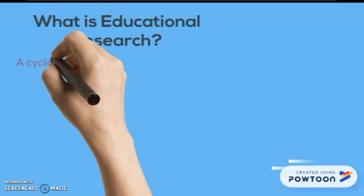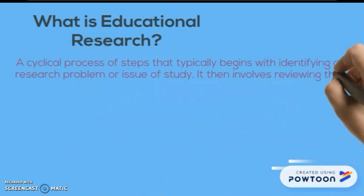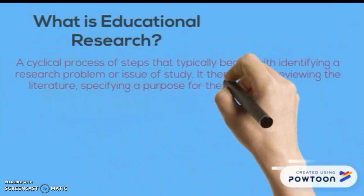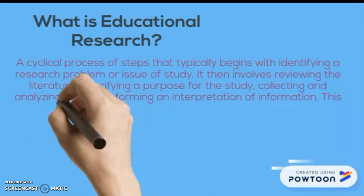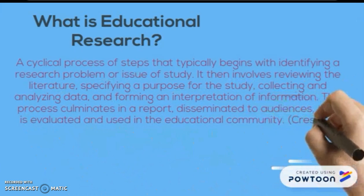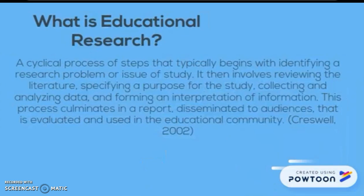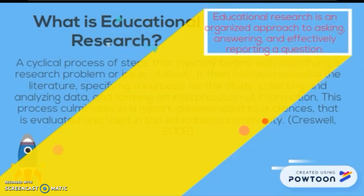Before seeing the detail, let us know what is educational research. It is a cyclical process where we determine the research problem, view literatures and do the purpose, collect the information and interpret it as a form of report. To say easily, educational research is an organized approach to ask, answer and effectively report a question.